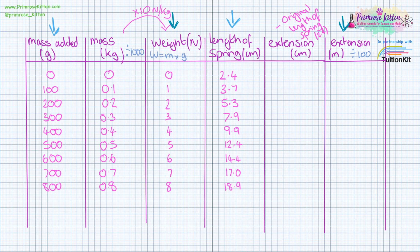So to work out the extension, we need to take the length of the spring and minus the original length of the spring, which is 2.4. So now I've taken all the numbers minus 2.4, I have my extension. Now I'm going to divide that by 100 to get that into meters.